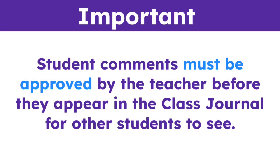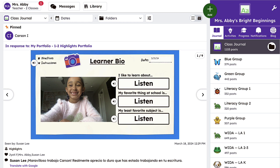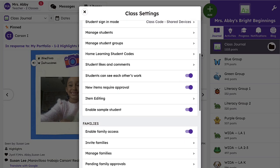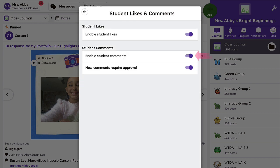Student comments must be approved by the teacher before they appear in the class journal for other students to see. If you want students to be able to comment on a post you have made, you will need to make sure that setting is enabled in your Seesaw class. To enable comments for all posts in Seesaw, click the settings icon and then select student likes and comments. Be sure student comments is toggled to the on position.